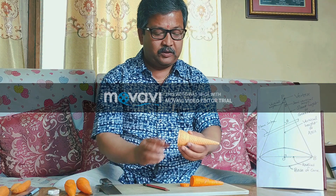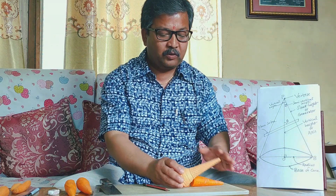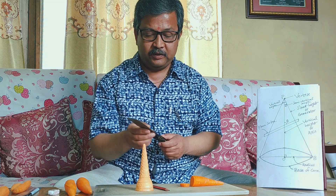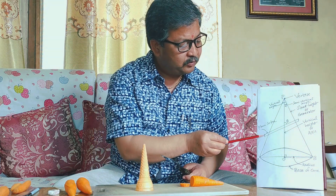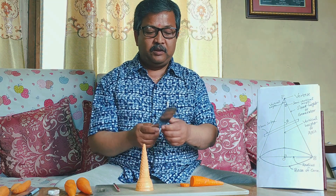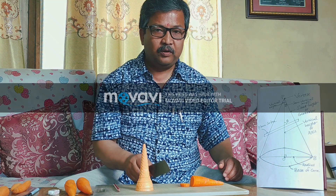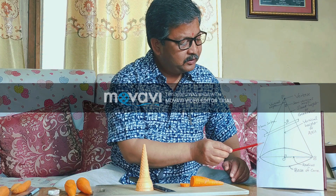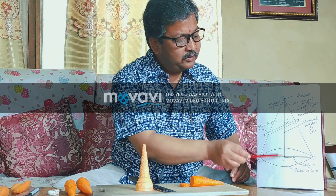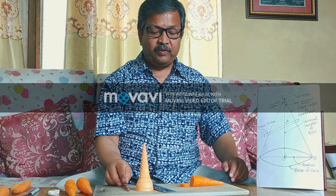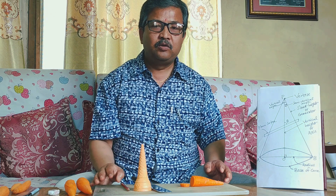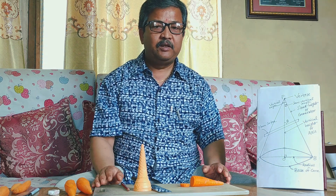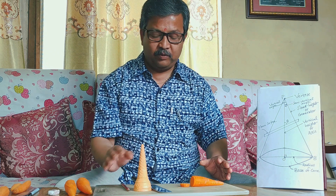On the basis of these parts of the cone, I am taking a plane surface, as shown in the figure. When this plane surface cuts the cone in different ways — based on the generator, the vertical height, and so on — we get different geometrical shapes. I am now going to demonstrate this using a solid cone, which here is a carrot.